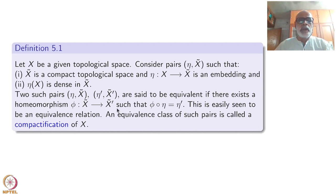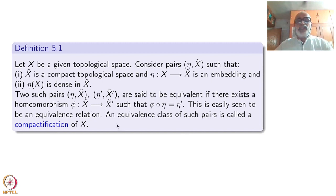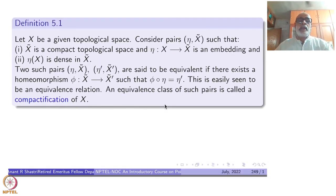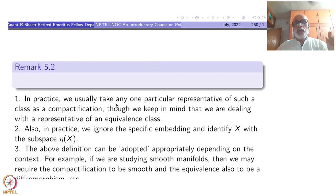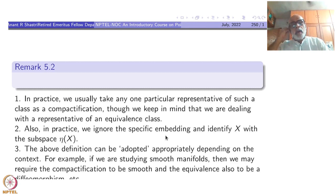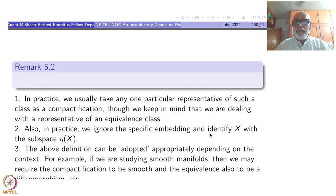In the entire class, you pick up any one of them — that is called the compactification. We take this liberty of language. For rigorous definition, we stick to this. The picture for equivalence classes: φ is a homeomorphism but satisfies φ∘η = η′. In practice, we usually take any one representative of such a class as a compactification, keeping in mind that we are dealing with a representative of an equivalence class. We also ignore the specific embedding of X inside X̃ and identify X with η(X).